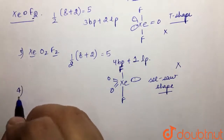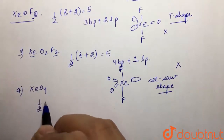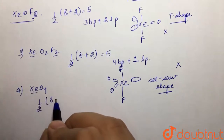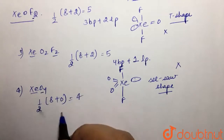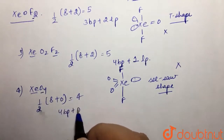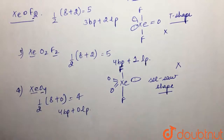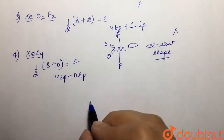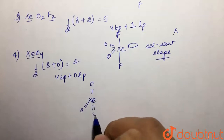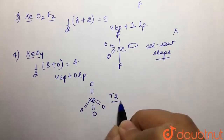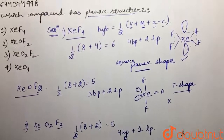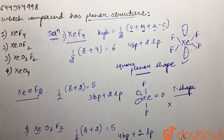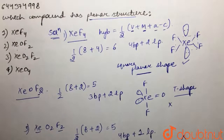The last compound is XeO4. Here it would be half of the valence electrons of xenon plus zero, since there are no monovalent atoms attached. This equals four. It is making four bond pairs, which means zero lone pairs, so the structure is tetrahedral — again not planar. Therefore, the only option that is planar is the first one, XeF4, which is square planar. Our answer is option one.